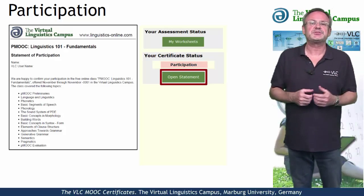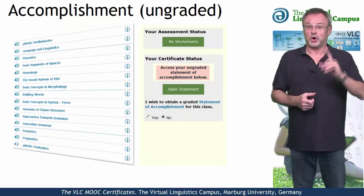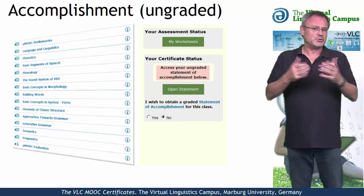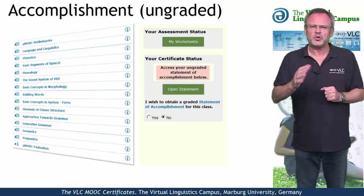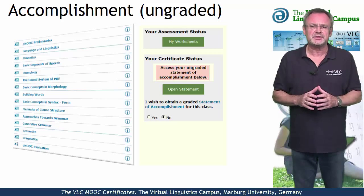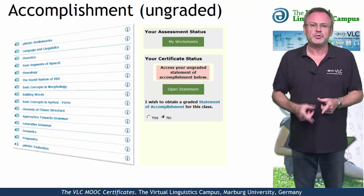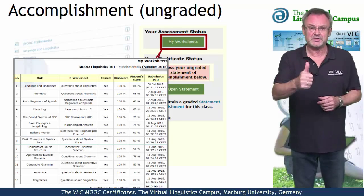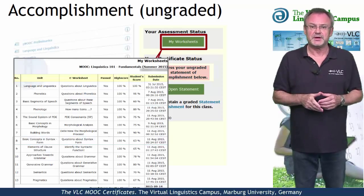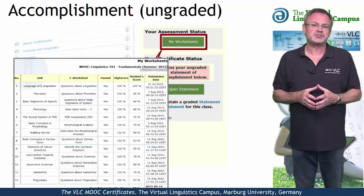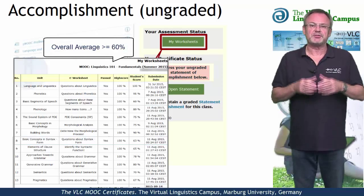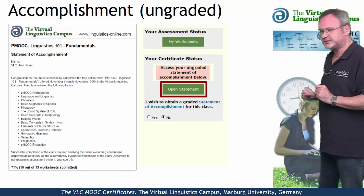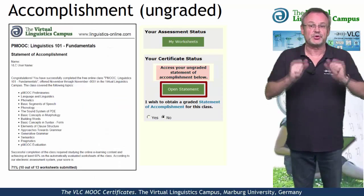The second option is the statement of accomplishment, also free and issued by the Virtual Linguistics Campus. To receive this certificate, we not only want your regular participation, but we also want you to complete the mastery worksheets — our electronic tests, one for each unit — and achieve an overall score of at least 60%. A simple click on the open statement button and the certificate is yours.